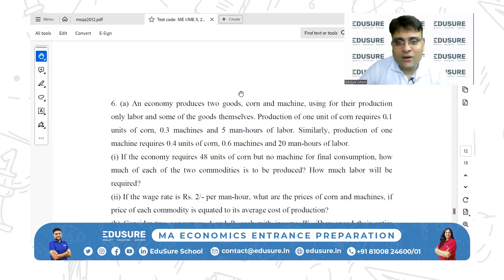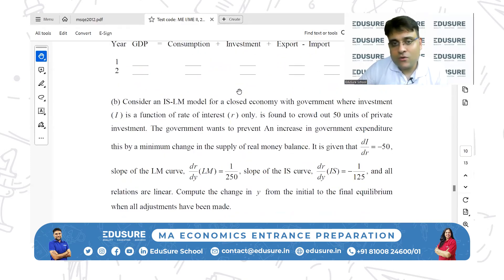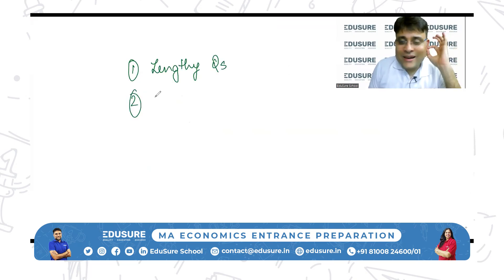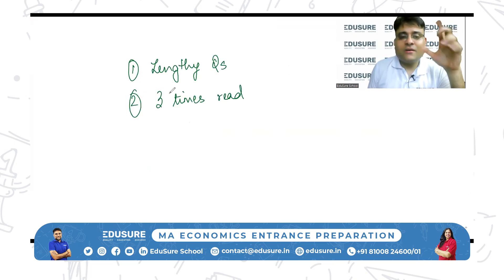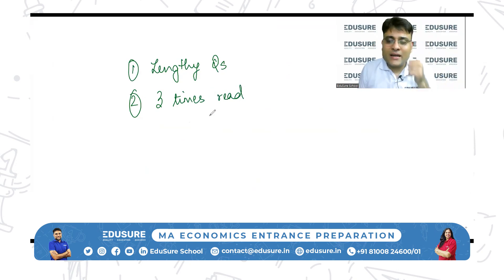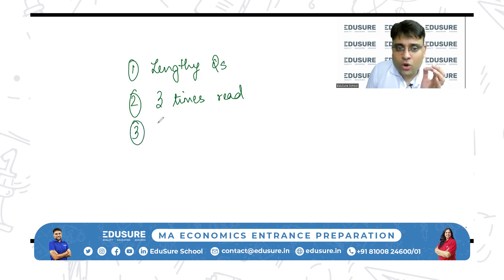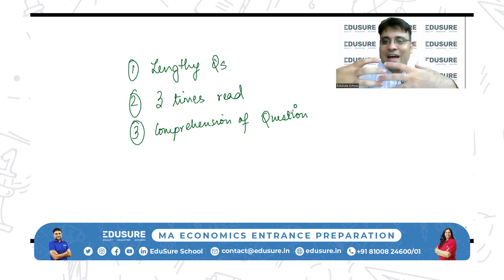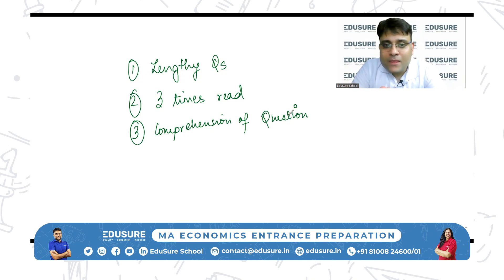Attempting the ISI PEB properly requires you to do two things. First, you have to be comfortable with reading lengthy questions — read the question at least three times. If you read it three times, your comprehension of the question should be good. This is where most students lose the battle in ISI PEB — most of you are baffled about what you are supposed to do.